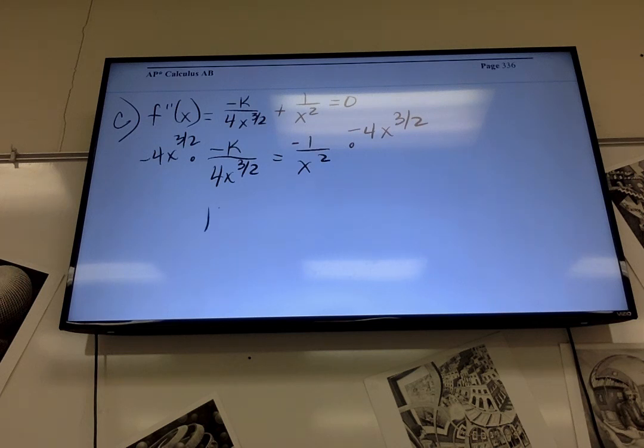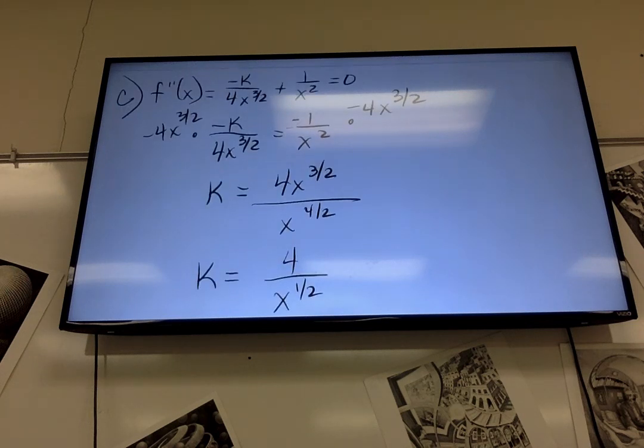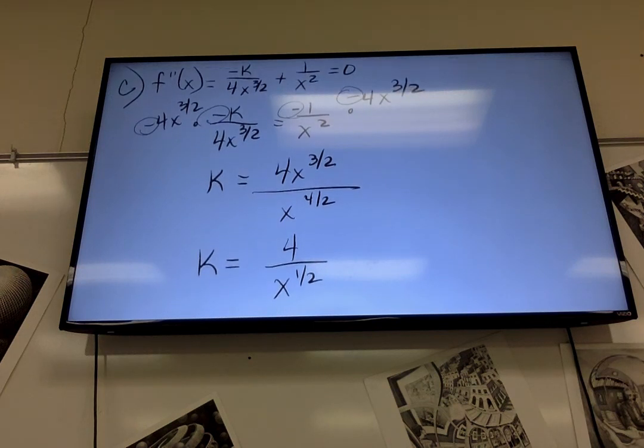All right. So we end up with k equals 4x to the 3 halves over x to the 4 halves. So that would be 4 over x to the 1 half. No. Because you divided by negative 1. Negative times a negative. It says it's negative k. Yeah, but that's where this negative came in. That's where the negative k is. Okay. I get lost. This is why we have Wynn, but Wynn's not here.